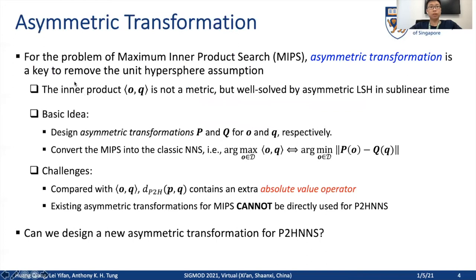On the other hand, for the problem of maximum inner product search, asymmetric transformation is a key to removing the unique hypersphere assumption. Similar to the point to hyperplane distance, the inner product is also not a metric, but this problem can be well solved by asymmetric LSH in sublinear time. Their basic idea is to design asymmetric transformations P and Q for the data point O and the query Q so that they can convert the maximum inner product search problem into the classic point to point NN search problem, and leverage state-of-the-art NN search methods in sublinear time. However, compared with the inner product, the point to hyperplane distance contains an extra absolute value operator, so existing asymmetric transformations cannot be directly used for the point to hyperplane NN search.